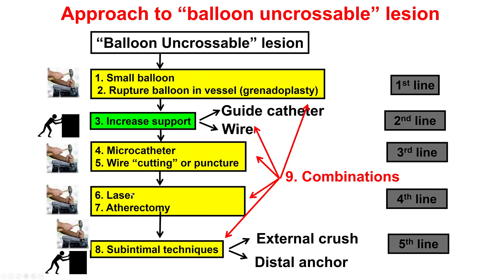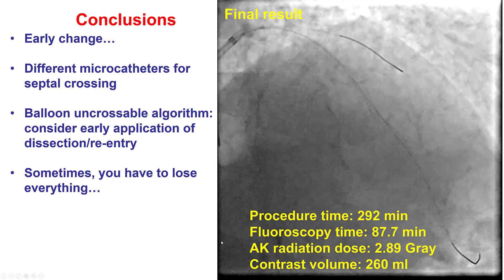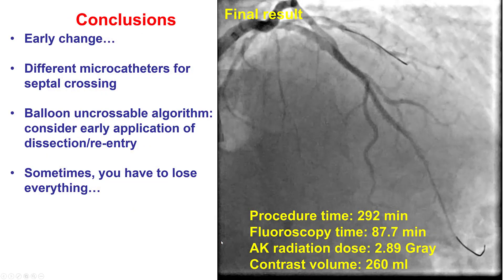In this case we had to go through the entire algorithm — small balloons, getting more support, different microcatheters. We did not try the wire-cutting technique, but we tried laser. We did not try atherectomy, but subintimal techniques were eventually successful in crossing the lesion and expanding it.